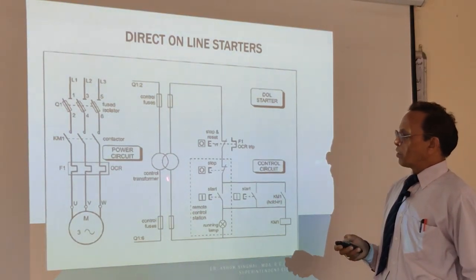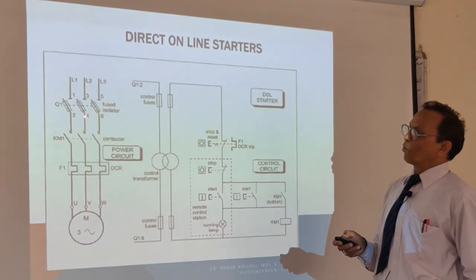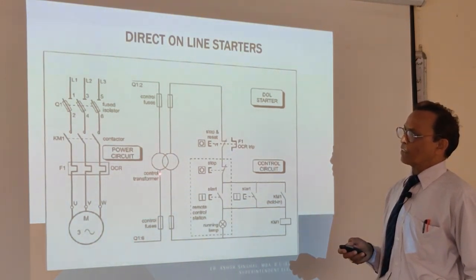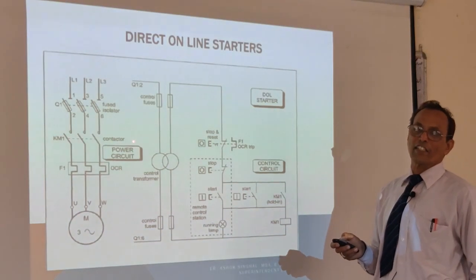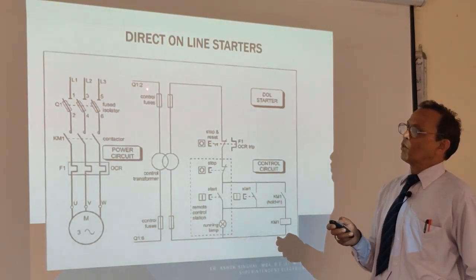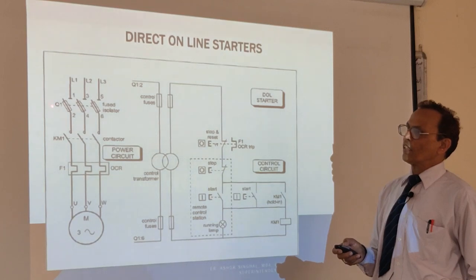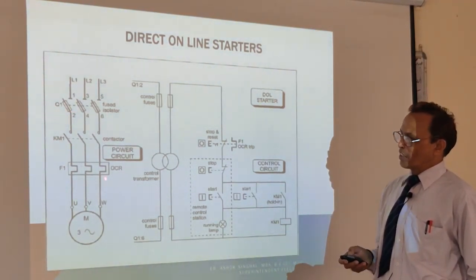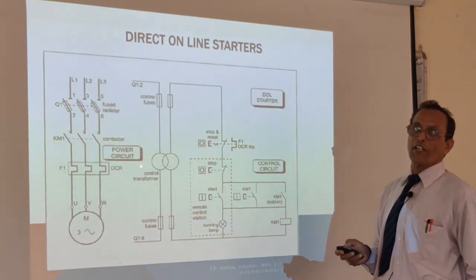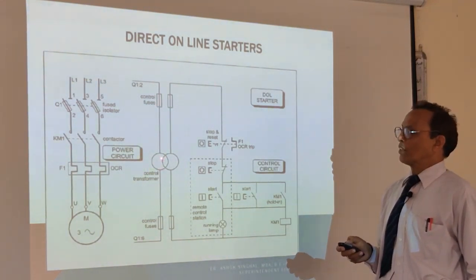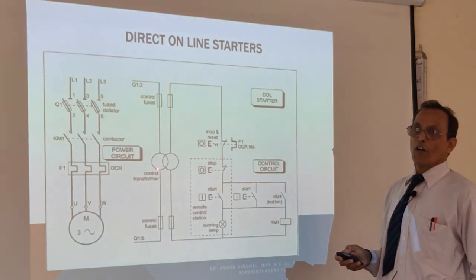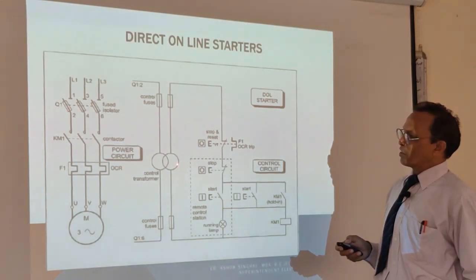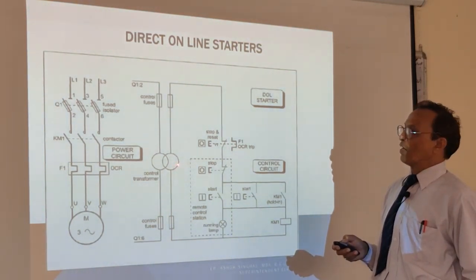This is your control circuit. The 440 volts comes from here to the step-down transformer. When tracing the electrical circuit diagram, Q12 means Q1 of this breaker — line 2 comes here, and Q16 comes to this point. This means 440 volts is available to the step-down transformer, which steps it down to 220 volts.